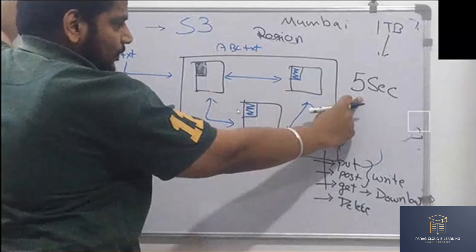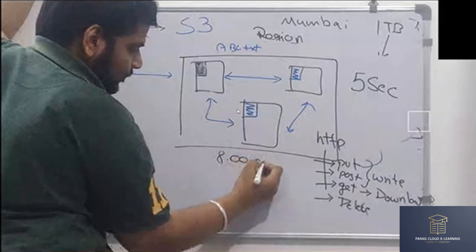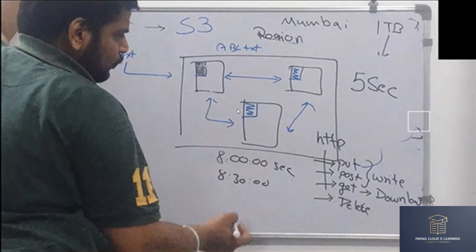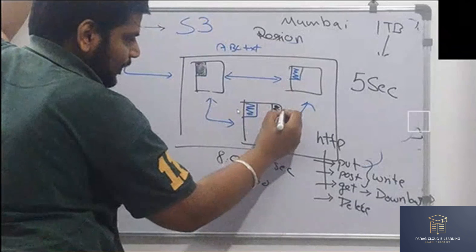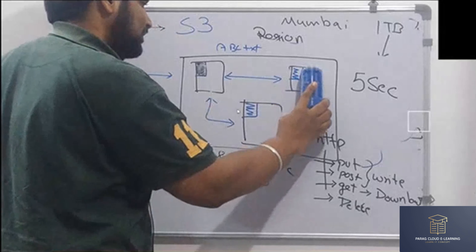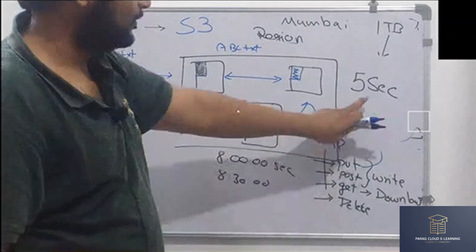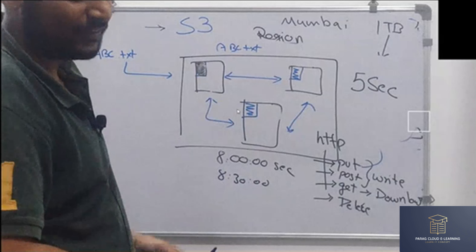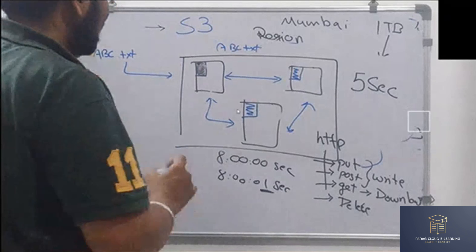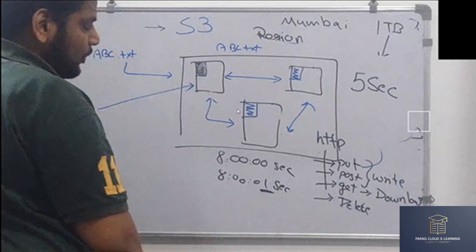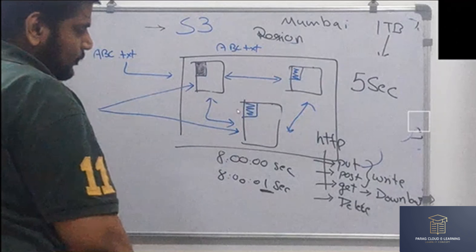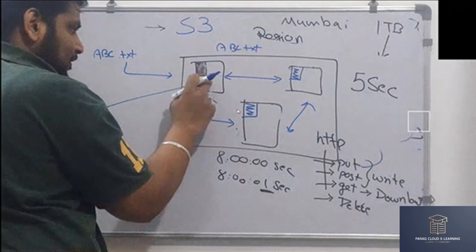If you are checking after five seconds — say it was uploaded at 8:00 and you are checking after 30 minutes — the sync has completed. But what if you have asked for the data before five seconds, the very next second after uploading? Again there will be two possibilities: either your request goes to the data center where the new data is uploaded, or your request goes to another availability zone where replication is still happening.